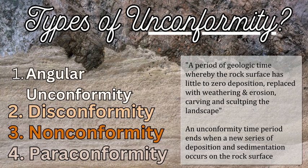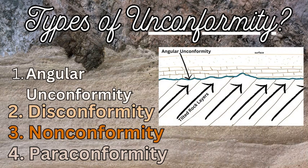Whether they are sedimentary, igneous, or metamorphic rocks, the combinations create different kinds of unconformities. The first is the classic one that Hutton saw at Siccar Point in Scotland — the angular unconformity — where you have tilted rocks and then above the tilted rocks you have horizontal rock, and you can see the difference between the angular rocks below and the horizontal strata above.